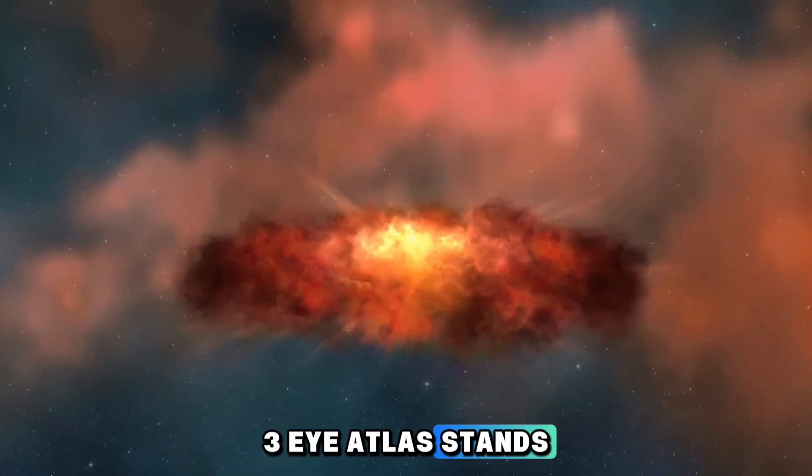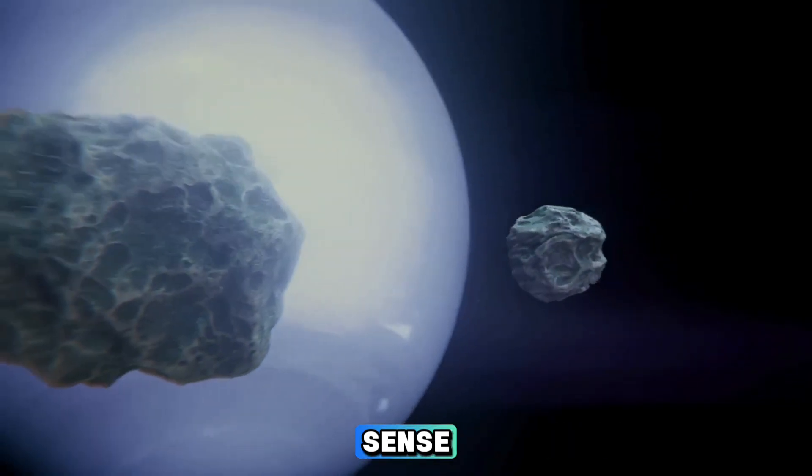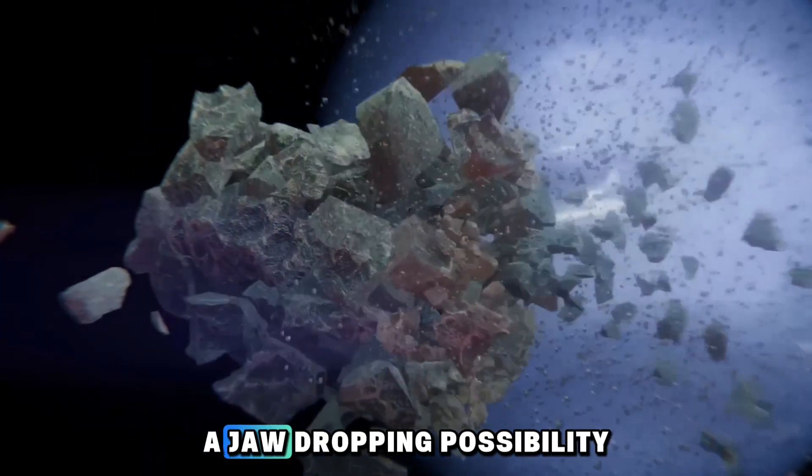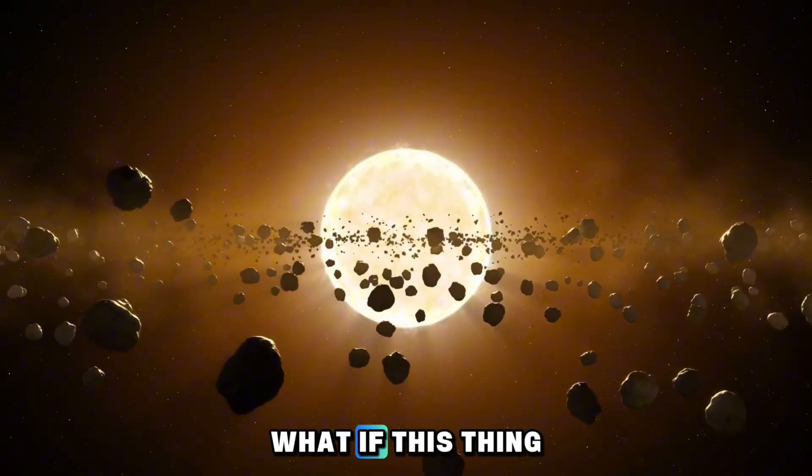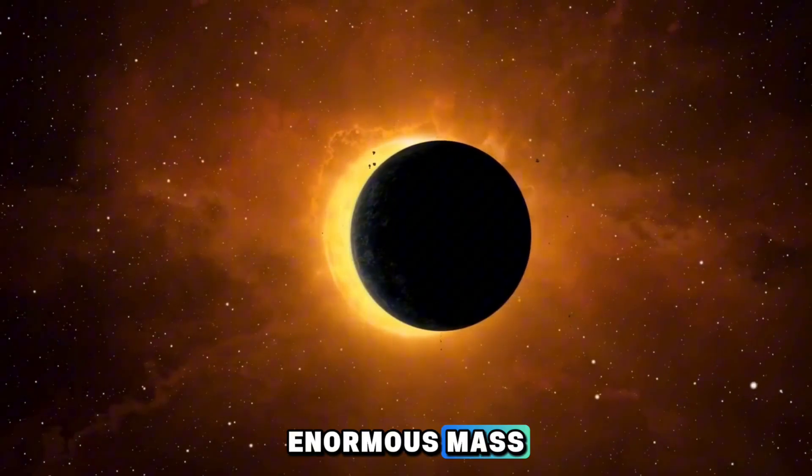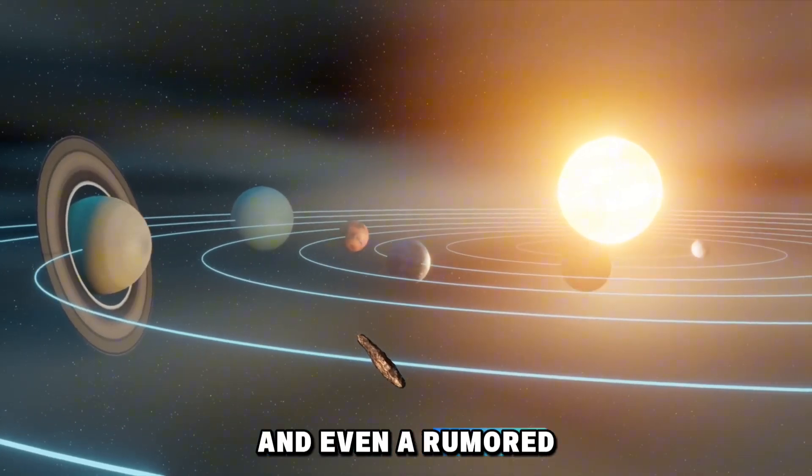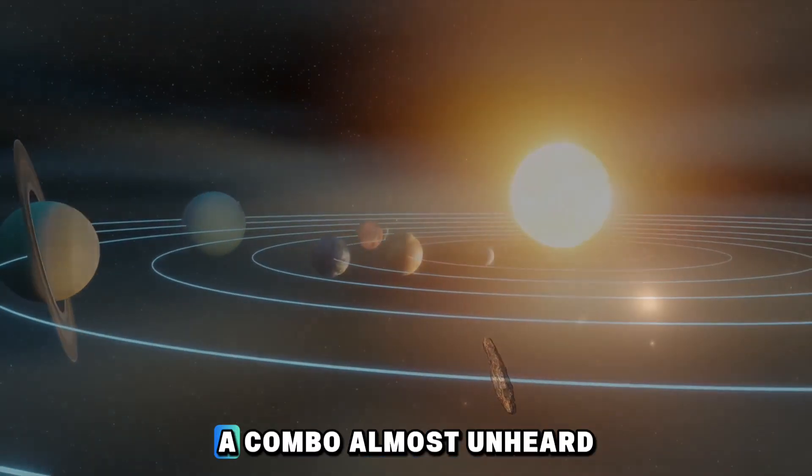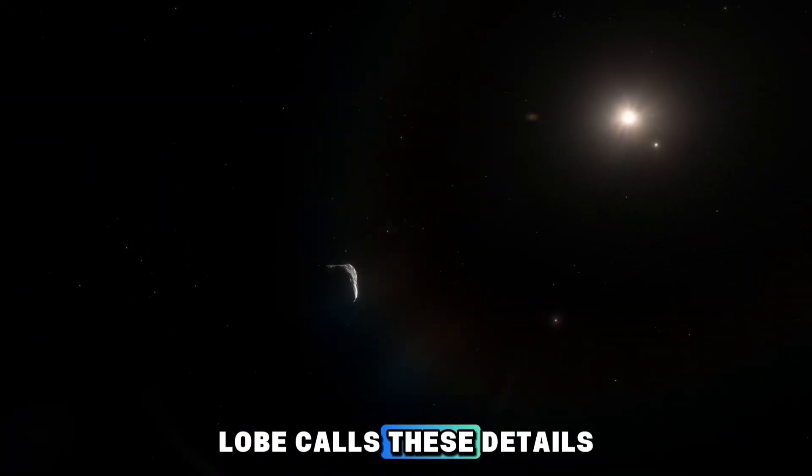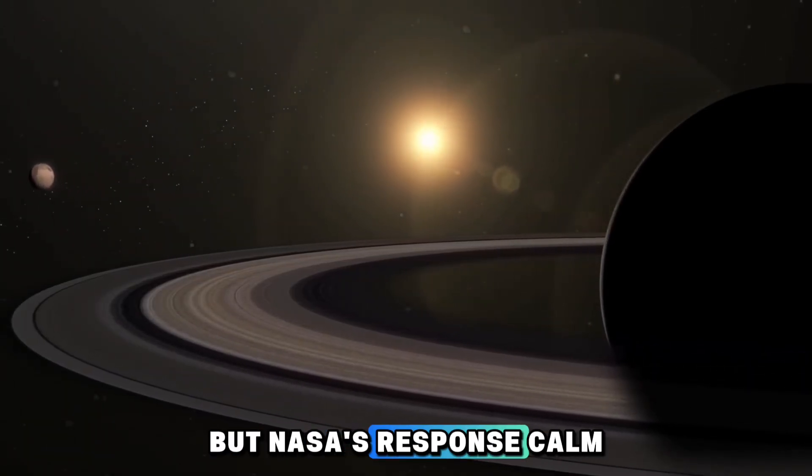3I Atlas stands out as a massive, mysterious outlier in every sense. Avi Loeb, never one to shy away from bold theories, has even hinted at a jaw-dropping possibility. What if this thing isn't natural at all? He's pointed to its enormous mass, its eerily precise trajectory, and even a rumored trace of nickel without iron, a combo almost unheard of in natural space rocks. Loeb calls these details provocative hints, and they've got the scientific world buzzing.